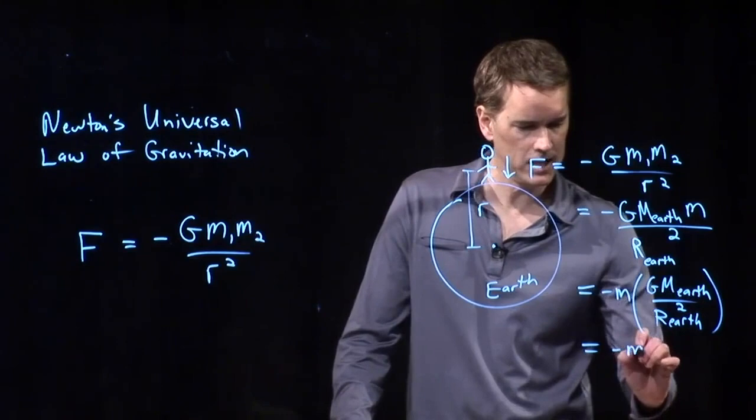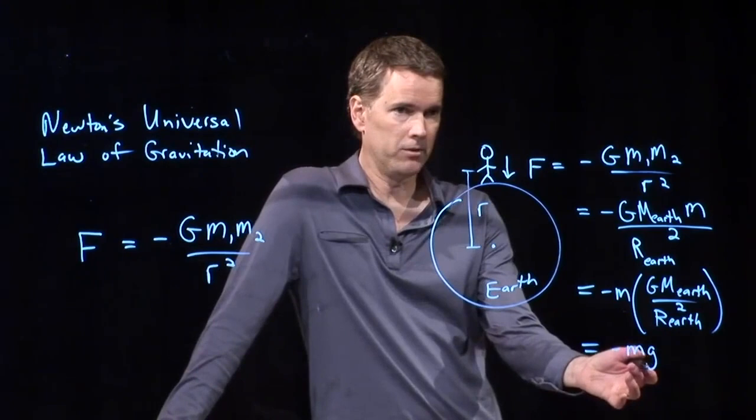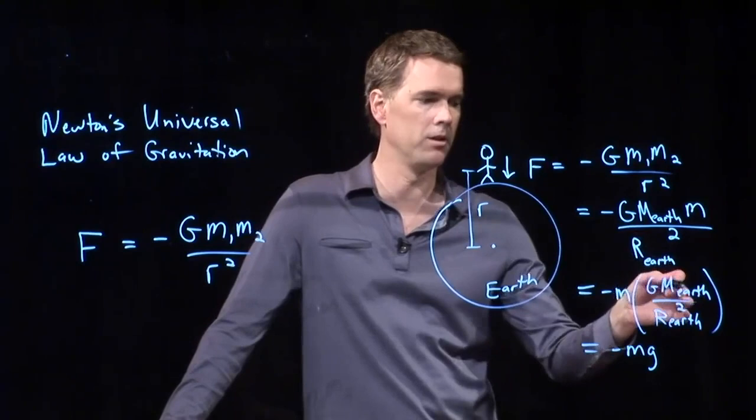Where did that 9.8 meters per second squared come from? It came from this stuff right here. Came from big G times the mass of the Earth divided by the radius of the Earth squared.